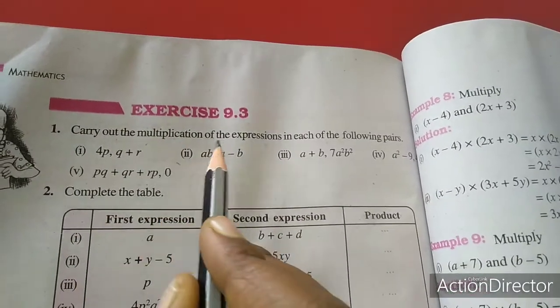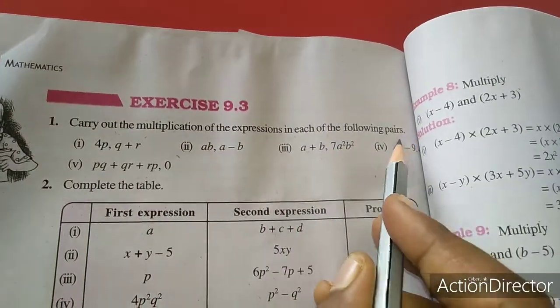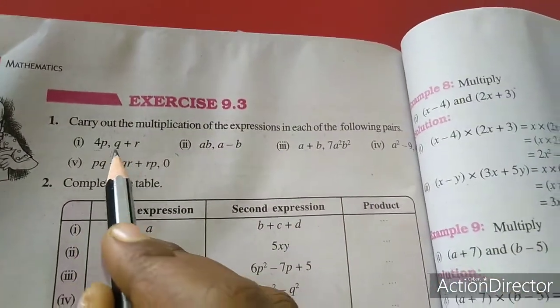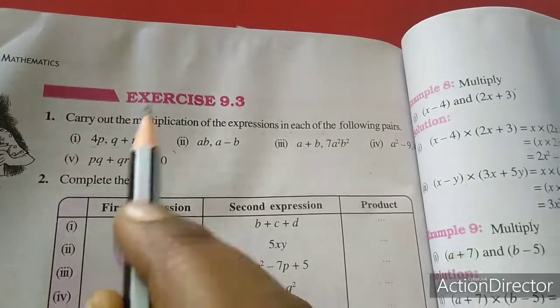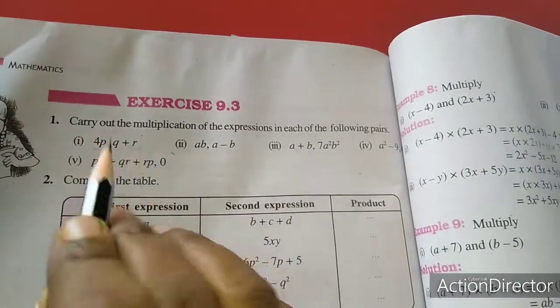In this exercise we are going to study about monomial and binomial multiplication. See here, carry out the multiplication of the expression in each of the following pairs. It is one monomial, it is binomial. It is the first step we will multiply.